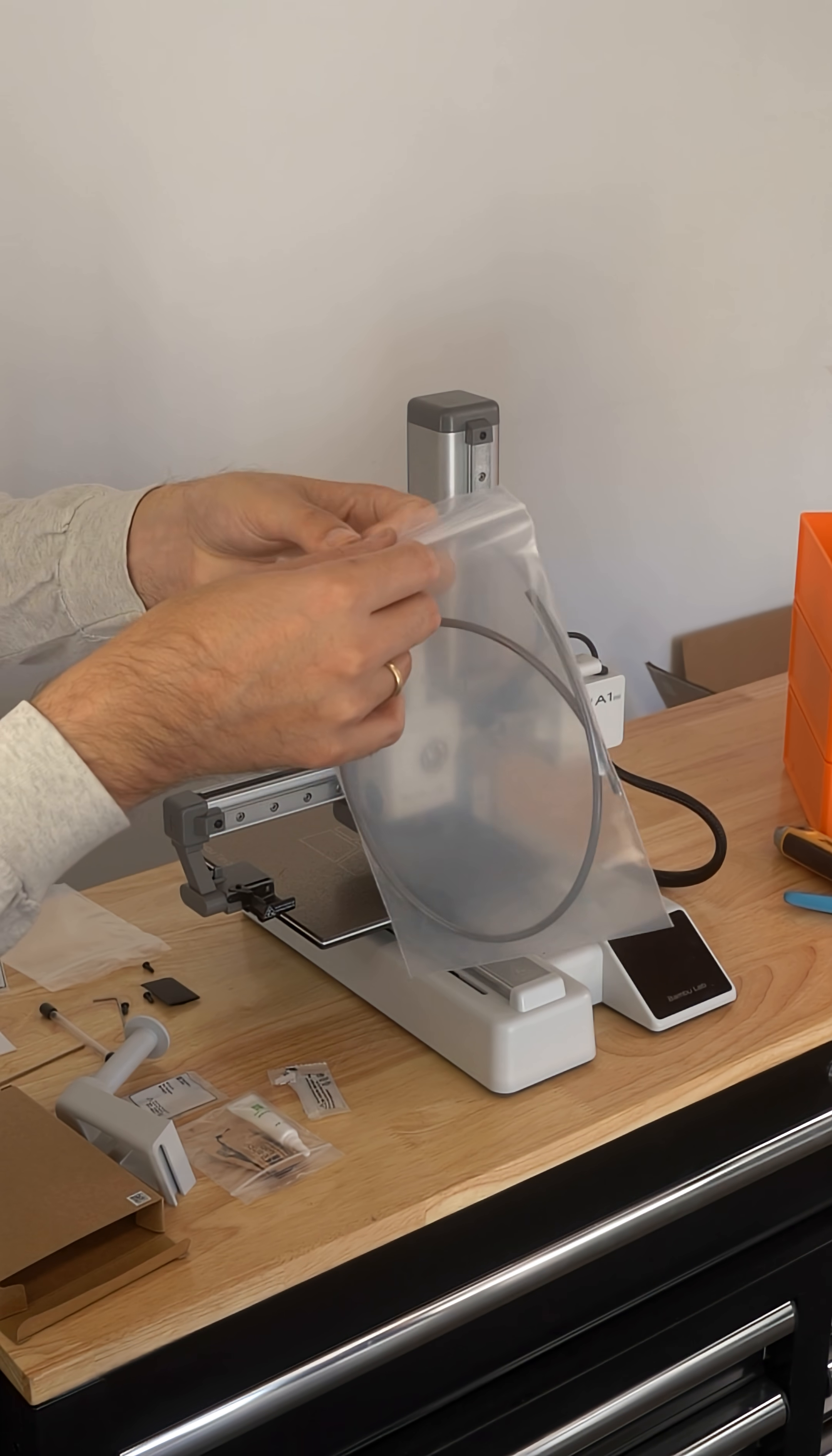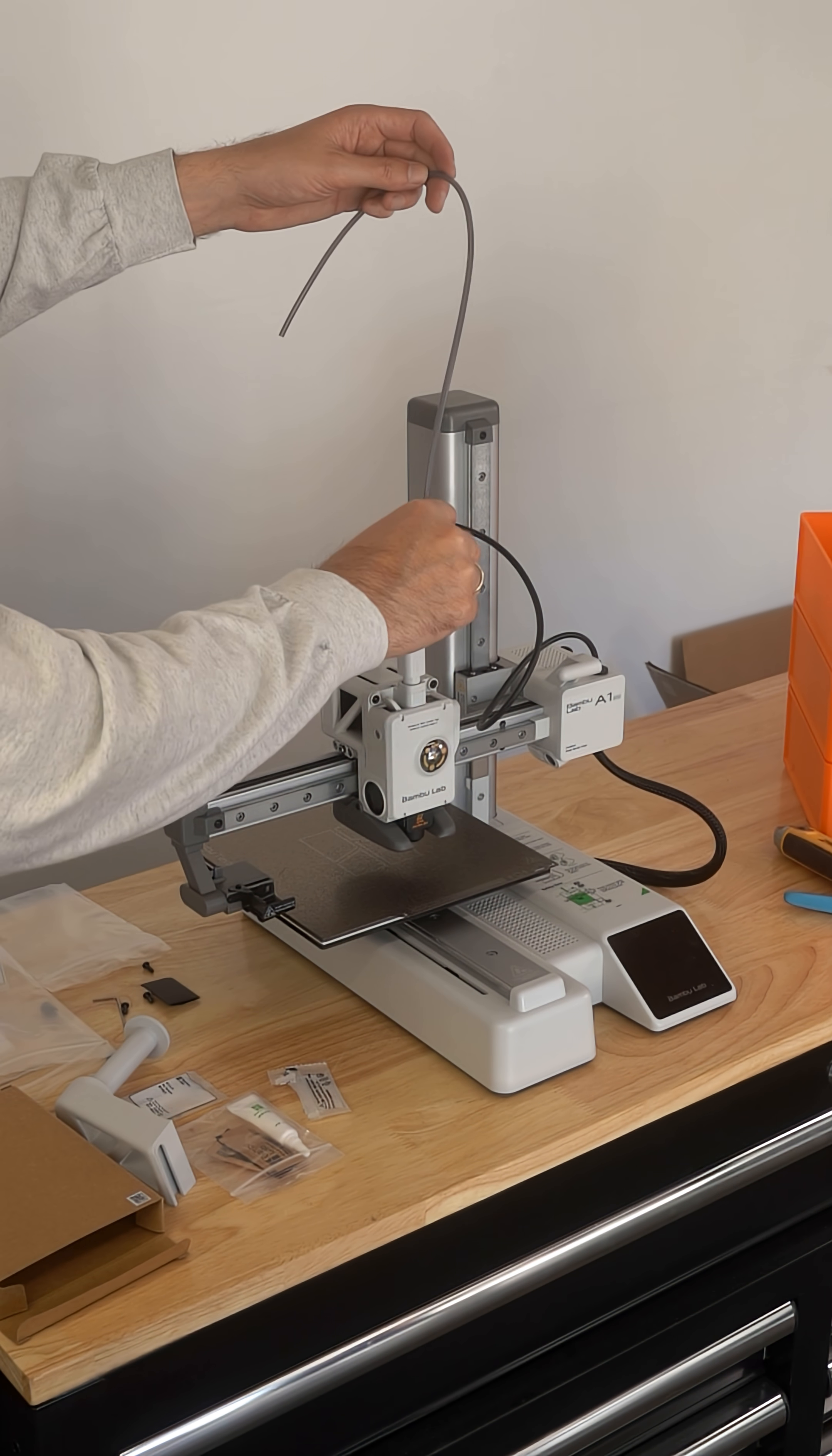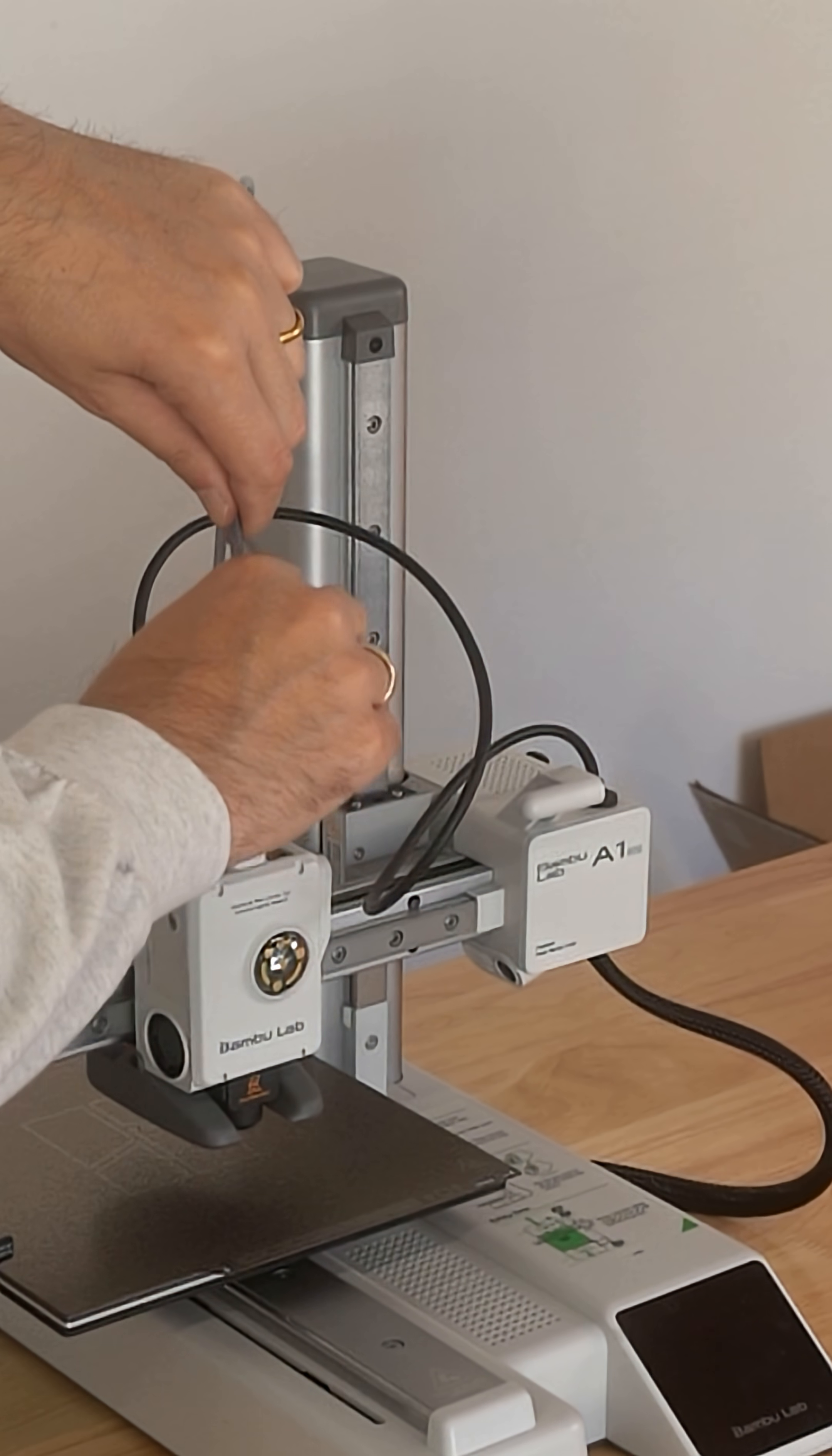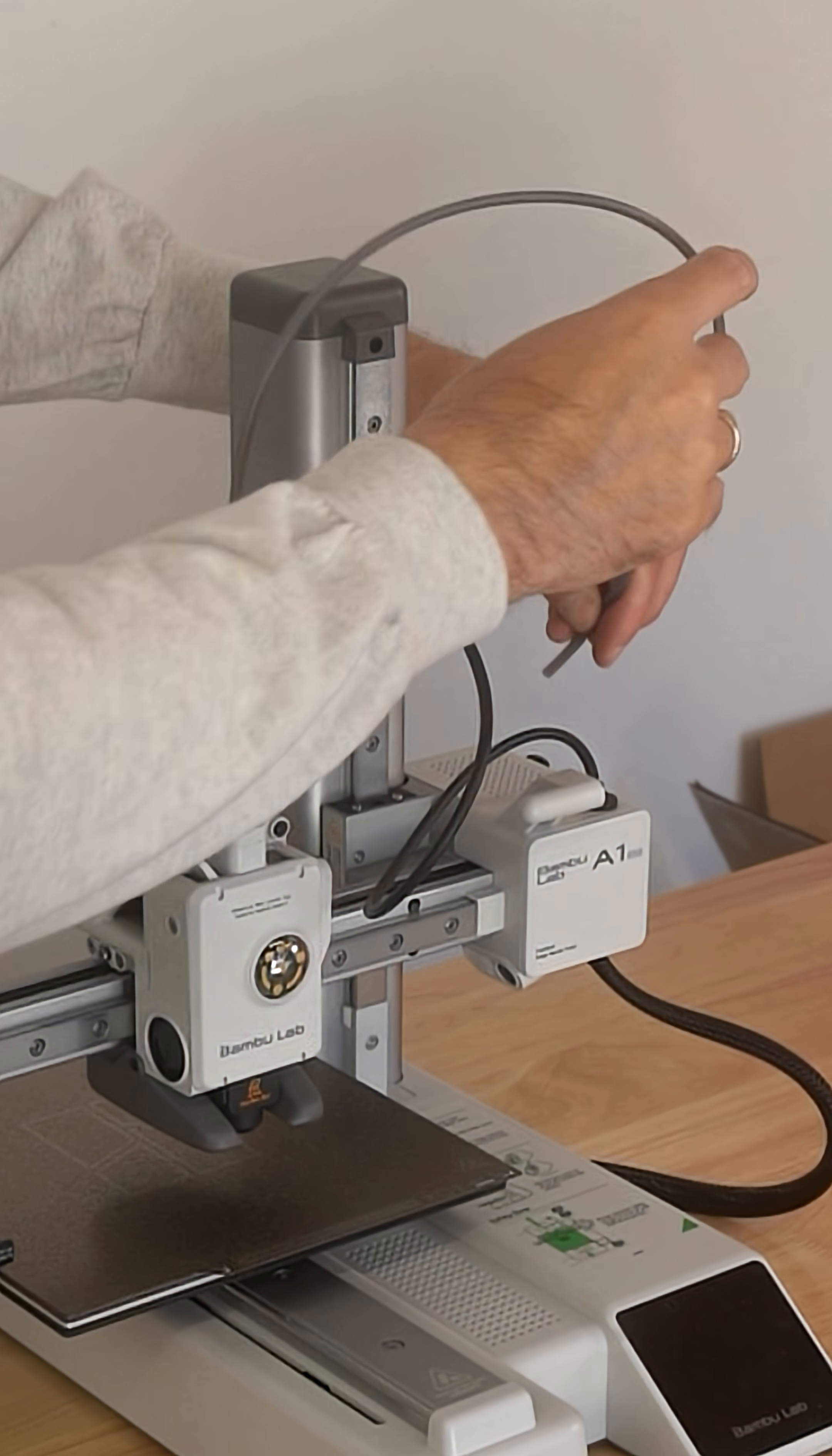Next, go ahead and find this gray tube. This is called the bowden tube. You could put it into any of the four holes on top of the extruder, and then put it into the hole on the back of the printer like so.